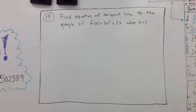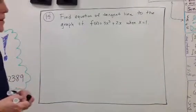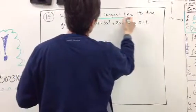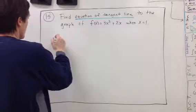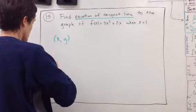Problem 15 says find the equation of a tangent line to the graph of f(x) = 3x³ + 2x, a cubic. The equation of a tangent line requires two pieces of information: you need a point and a slope.